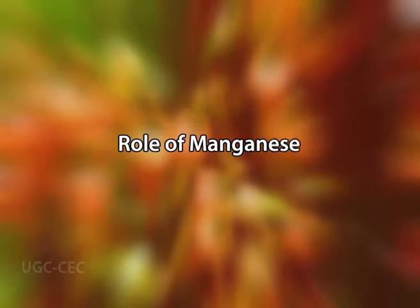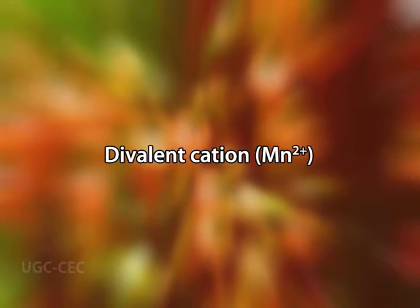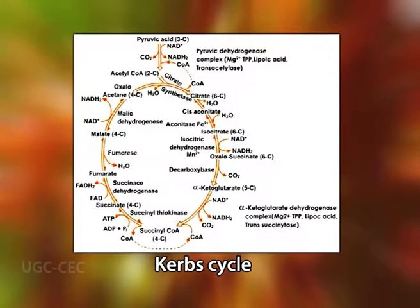Manganese is absorbed and transported within the plant mainly as the divalent cation. It is required as a cofactor for a number of enzymes, particularly decarboxylase and dehydrogenase enzymes, which play a critical role in the CAC cycle. The best-defined role of manganese is in photosynthetic oxygen evolution.